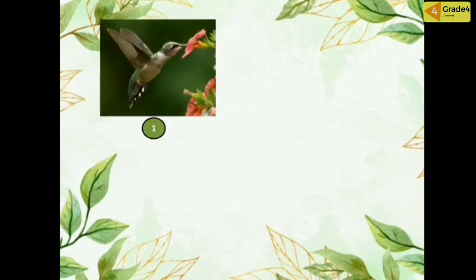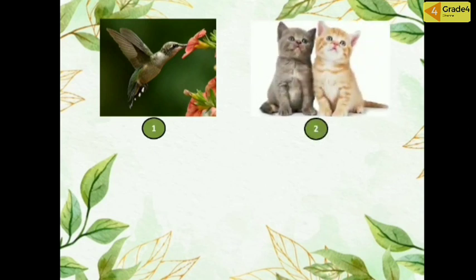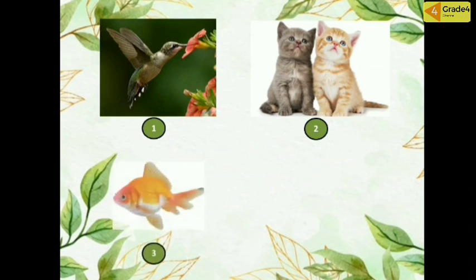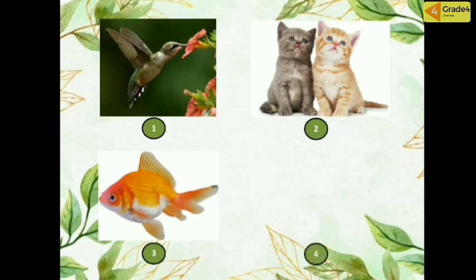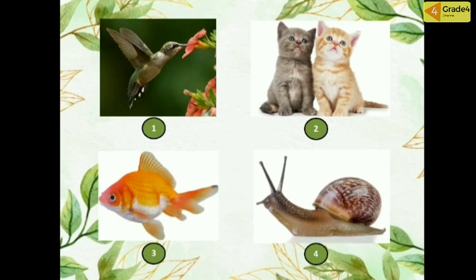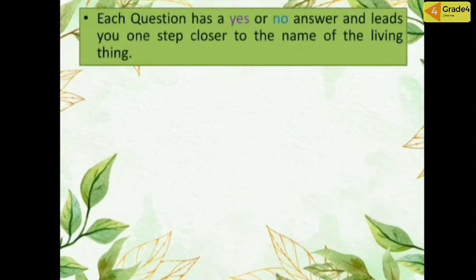I have four animals in the picture: birds, cats, fish, and snail. I want to make identification keys in order to identify each of these animals at the end. I need to ask yes or no questions to get to each animal. The first question in an identification key must be a general question, and then the next questions get more specific.